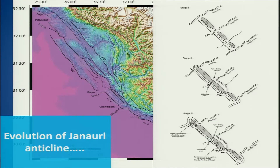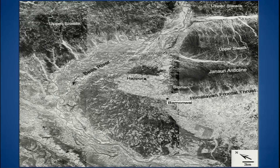After the linkage, this portion started growing up — which we will be discussing in the next coming slides — and how this was responsible. Initially the Bias river also flowed without any interference from this tip, but now what we see is that the Bias has been pushed further northwest because of the growth on the tip of the Janowri anticline. These are the two faults which are propagating in the northwest direction and pushing it further northwest.